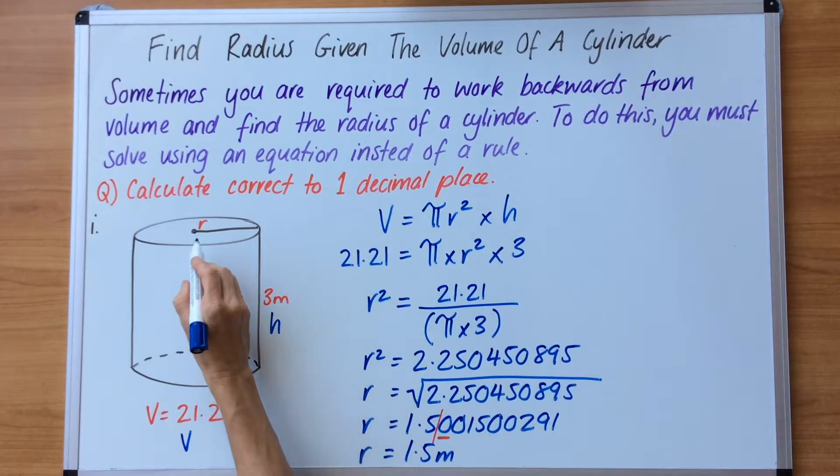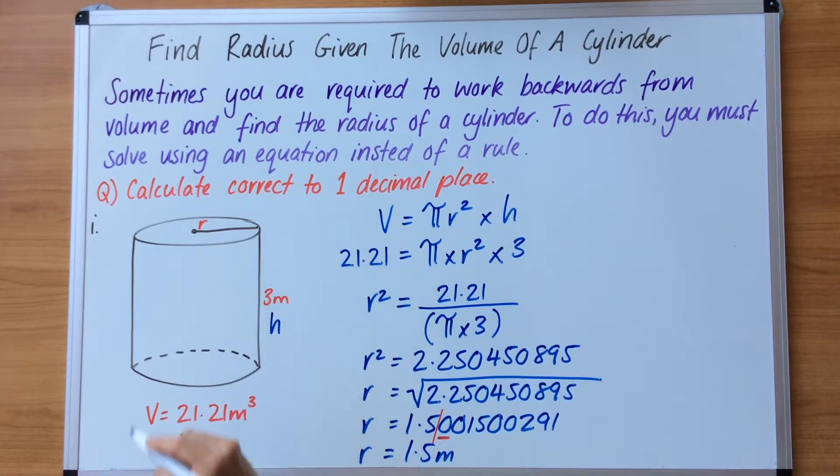So we have just discovered the length of this radius. And if you wanted to check your work, you can work backwards and you can use the new radius you've just found of 1.5, calculate it with the height of 3, and you should come up with this 21.21 meters cubed.